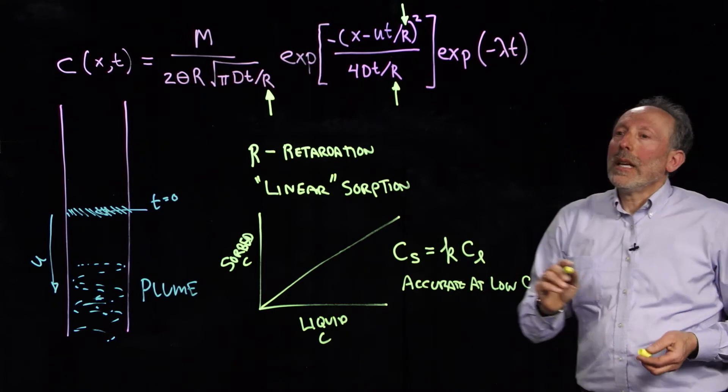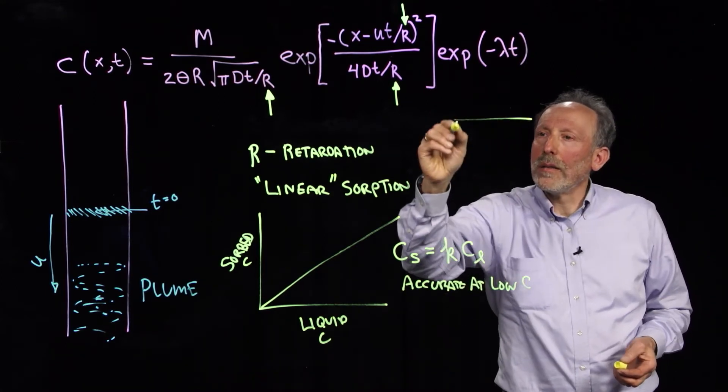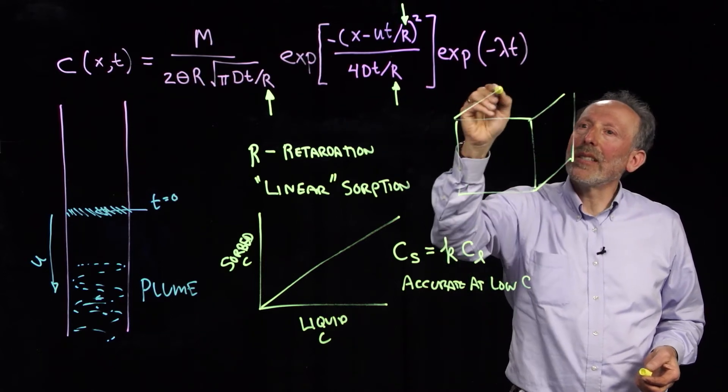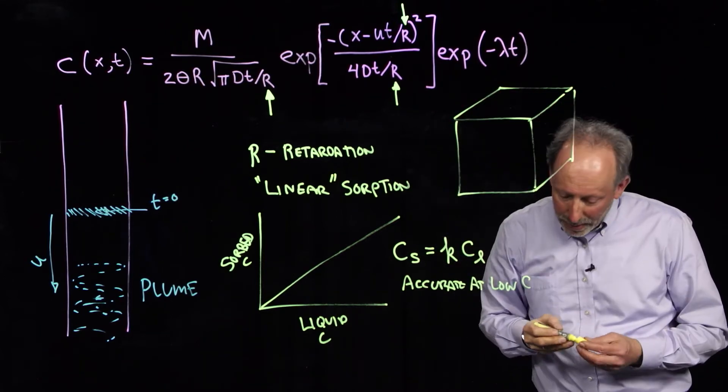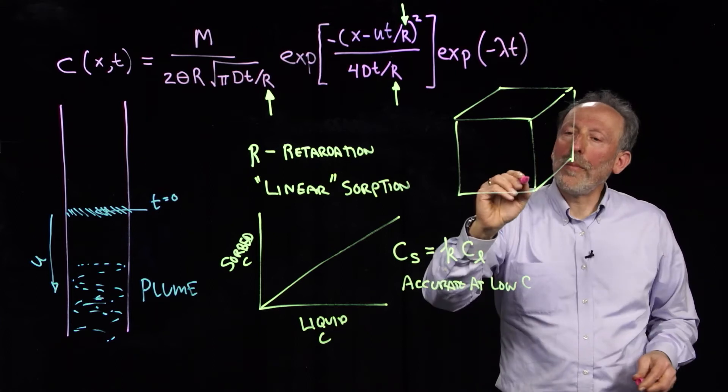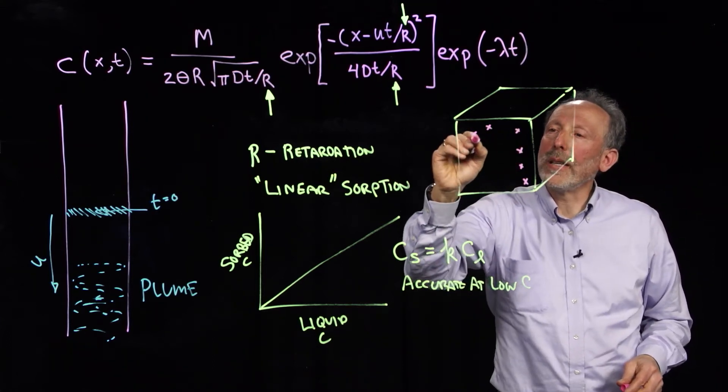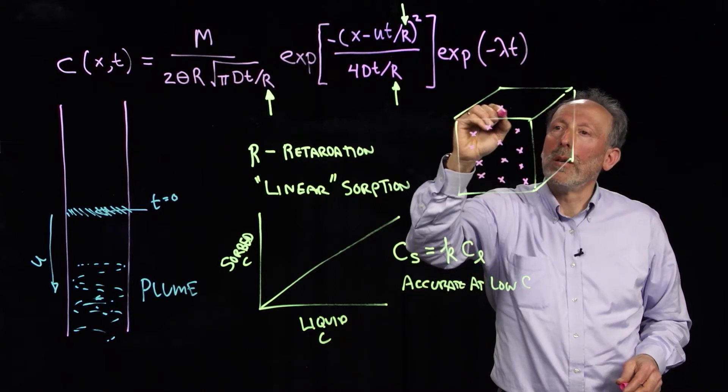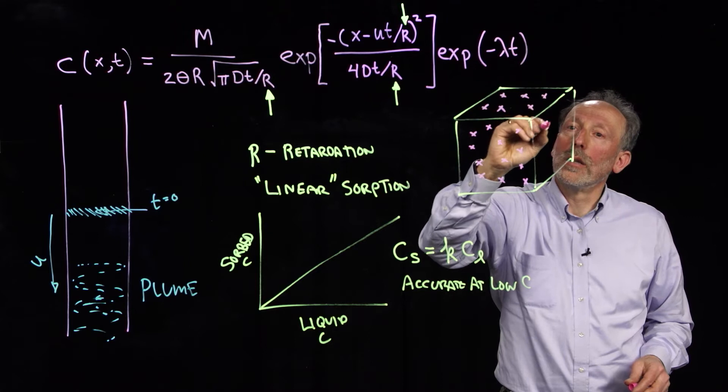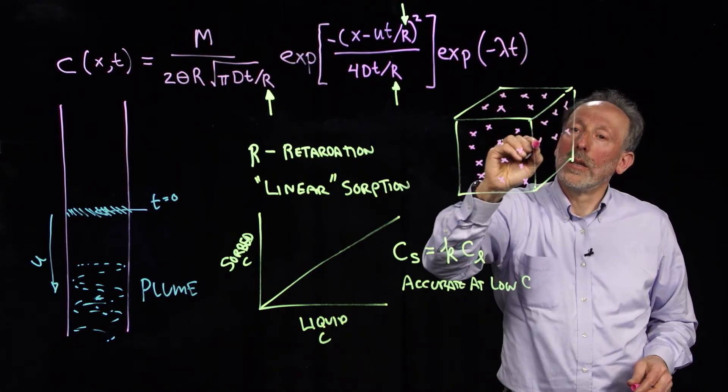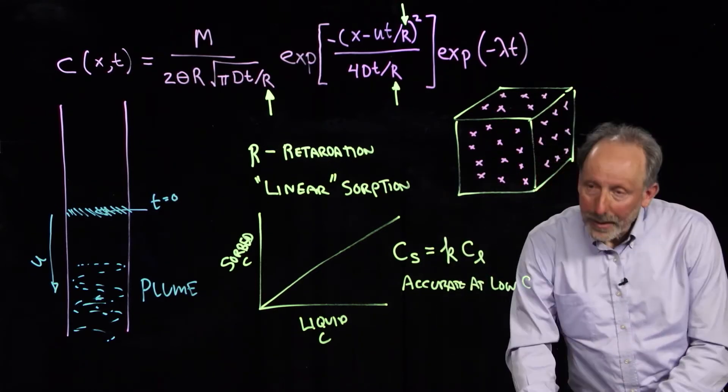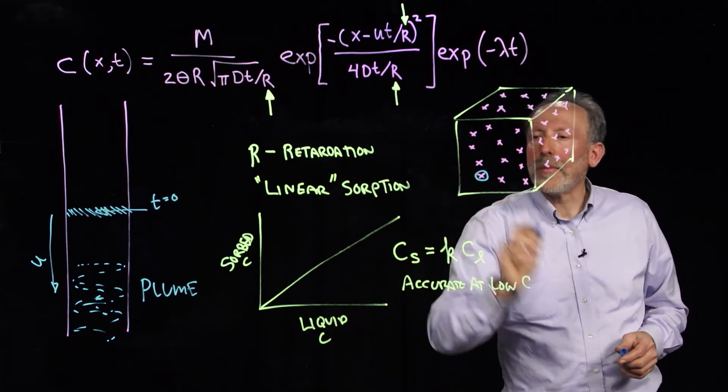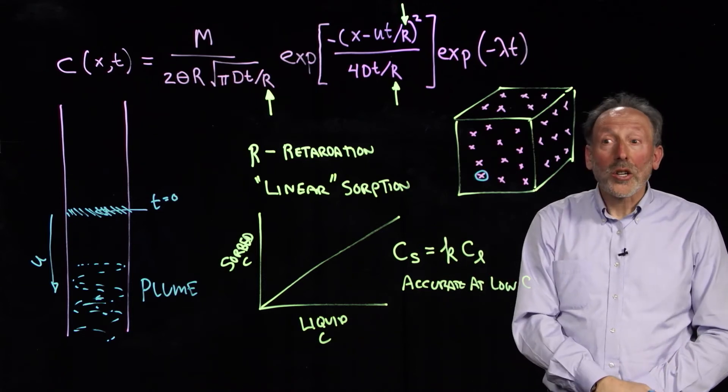Why is that? Basically, we have a solid here I'll draw. And it has these sorption sites. And so, there are many, many places that are chemically reactive where our solute might sorb. Now, what happens is when there's low concentration, maybe one of them gets a solute stuck to it. But that leaves all the rest of them open.